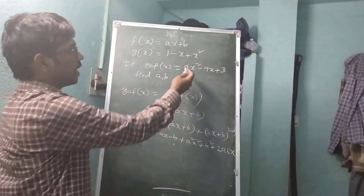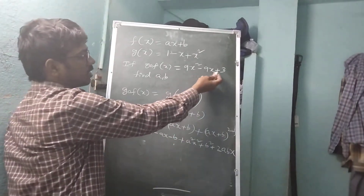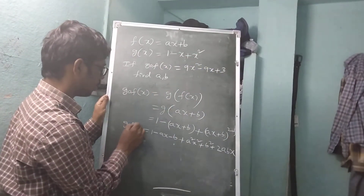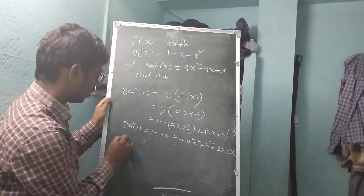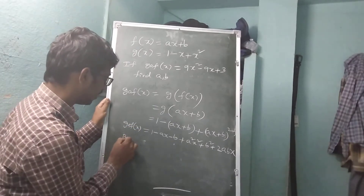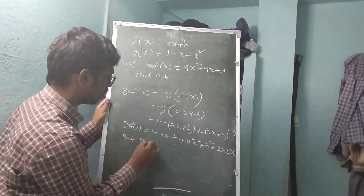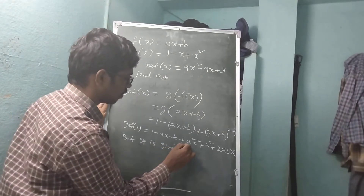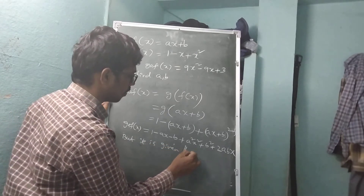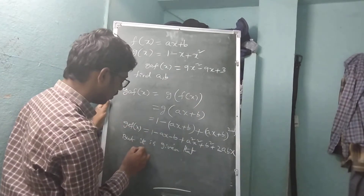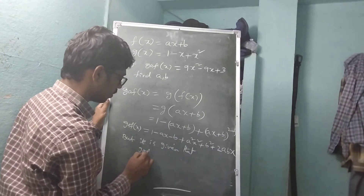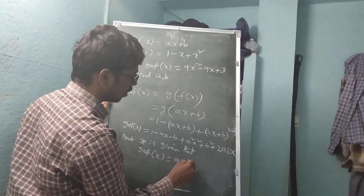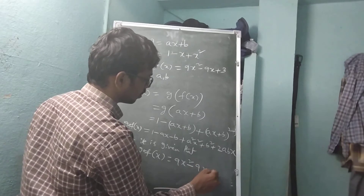This means the g circle f of x value is equal to 9x squared minus 9x plus 3. But it is given that g circle f of x is equal to 9x squared minus 9x plus 3.